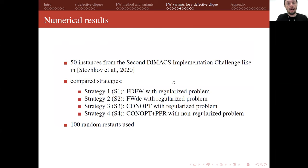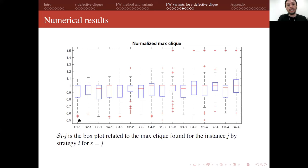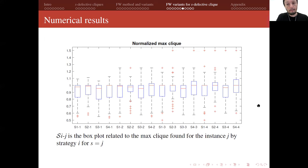We tested the FWDC method on instances from the second DIMACS implementation challenge, comparing our method FWDC and FDFW, and CONOPT over the regularized problem. We also compared these approaches with the method by Stochkov and co-authors, combining CONOPT with a post-processing routine for the non-regularized problem. Using 100 restarts per instance, results show that our proposed method is robust in terms of maximum s-defective clique quality and guarantees much better performance in terms of CPU time.